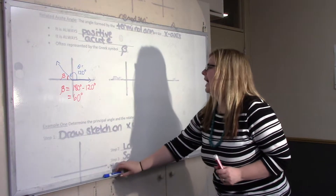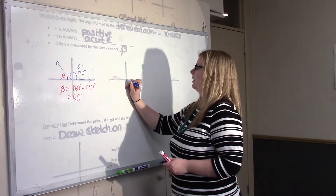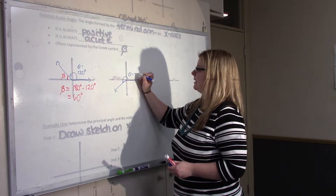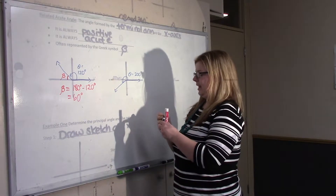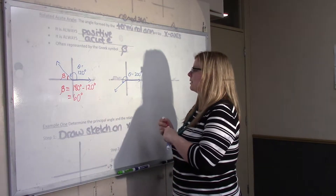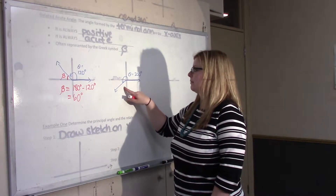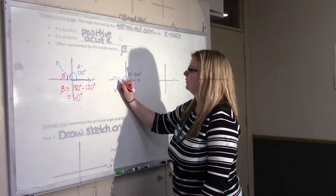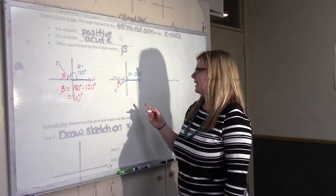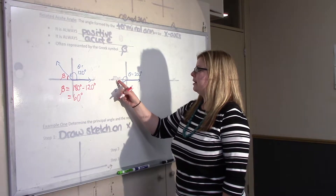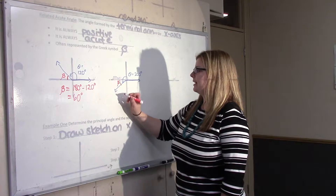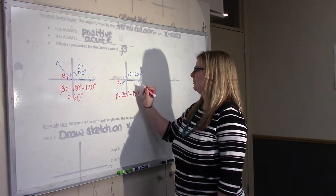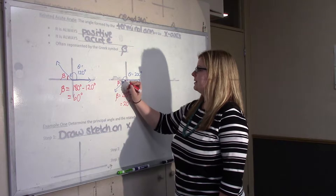Now if you have a principal angle that terminates in quadrant 3 — let's say in this case it's 200 degrees — beta is always between the terminal arm and the x-axis, so beta is actually right here. All the way to 200, we can take out 180 of it and see what's left. So beta in this case is 200 degrees minus 180, leaving 20 degrees.